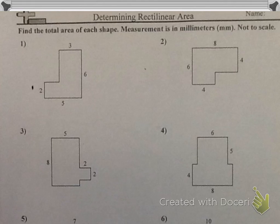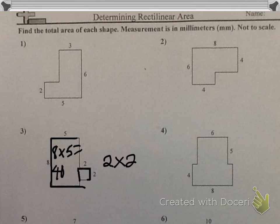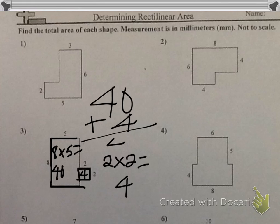We're going to do number 3 together, and then you can try the rest on your own. For number 3, I'm going to break the rectilinear figure here. I see that the large rectangle has a length of 8 and a width of 5, and 8 times 5 equals 40. The smaller rectangle has a length of 2 and a width of 2, which equals 4. Then I need to add the two smaller rectangles together: 40 for the larger rectangle plus 4 for the smaller rectangle, which would equal 44. So the area of the entire rectilinear figure would be 44 millimeters squared.